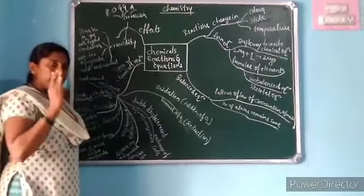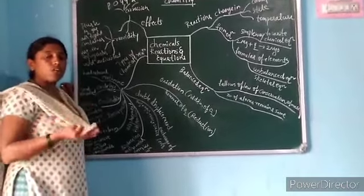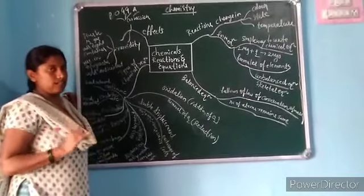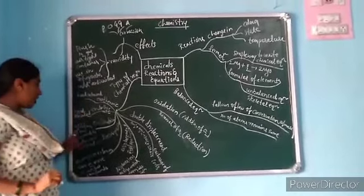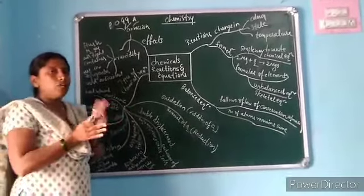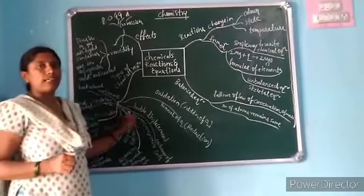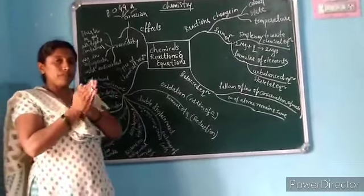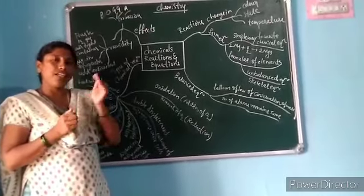Photolytic means breakdown of a compound by sunlight. Thermolysis means breakdown of a compound by heat. Electrolysis means breakdown of a compound by electricity. So there are three types under decomposition reactions. Combination reaction: two or more reactants combined to form a single product is called a combination reaction. Decomposition reaction: a single reactant breaks down into two or more products.